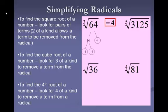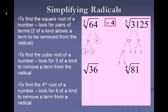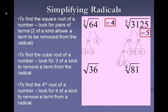Now when I do the fifth root of 3,125, this is the fifth root, so it takes 5 of the same number, and I have 5 fives, so 5 is my answer. When I break down the square root of 36, it's a square root so I need 2 of the same number, and I have 2 sixes when I break down 36 in a factor tree, so I get 6 for my answer.